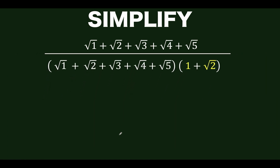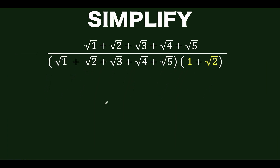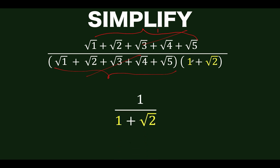Let's replace the denominator with that value. Notice again that this expression is the same as this part of the denominator, so we can cancel them out. The result is 1. So what is left is 1 over 1 plus square root of 2. Amazing!